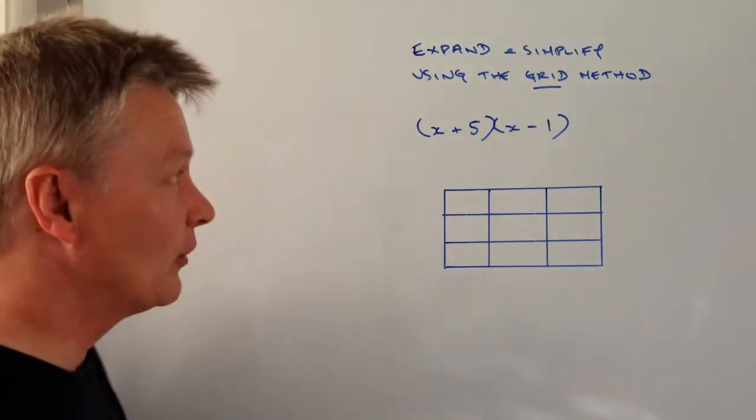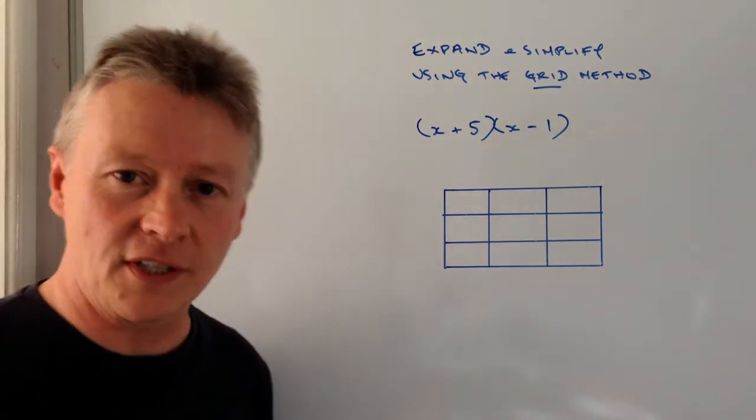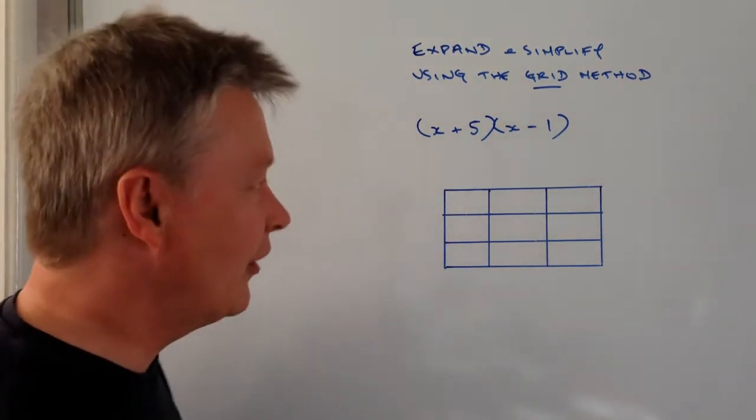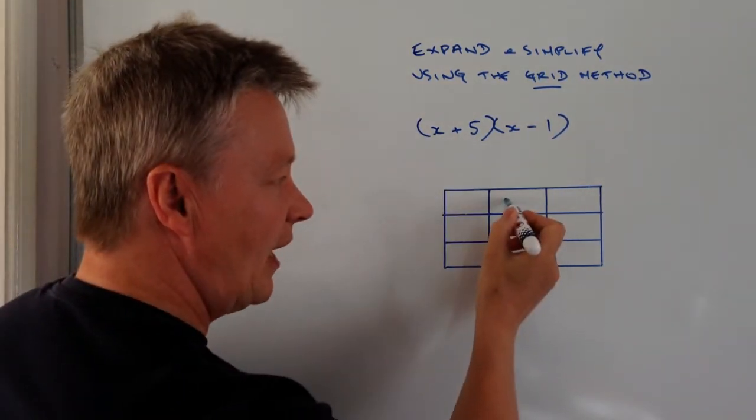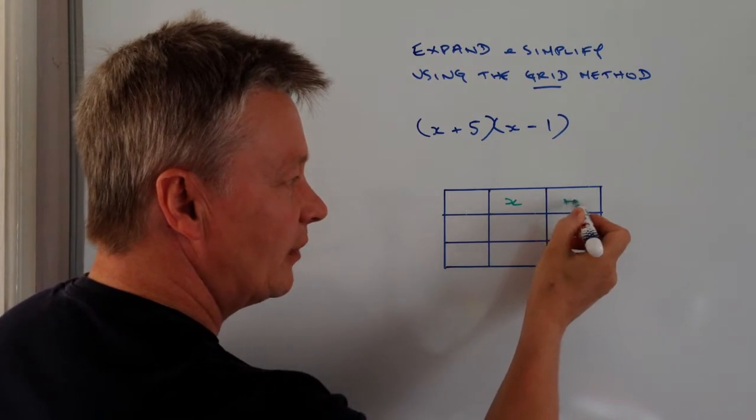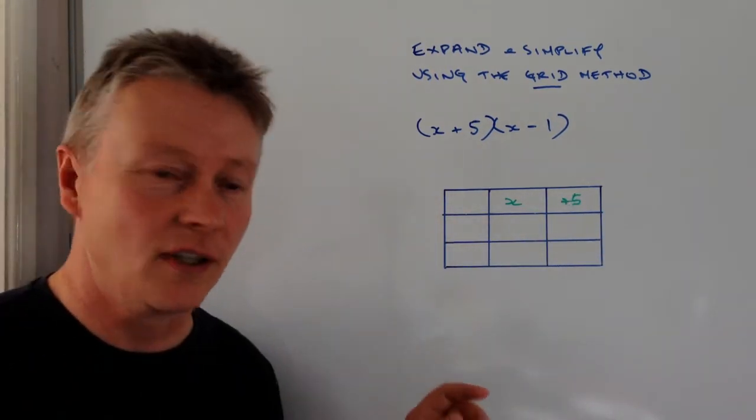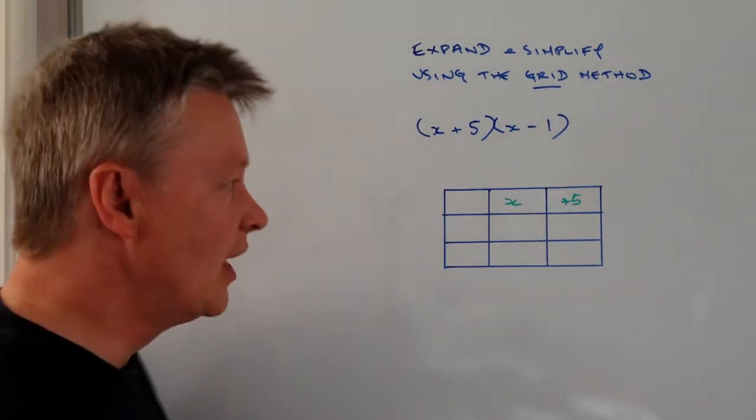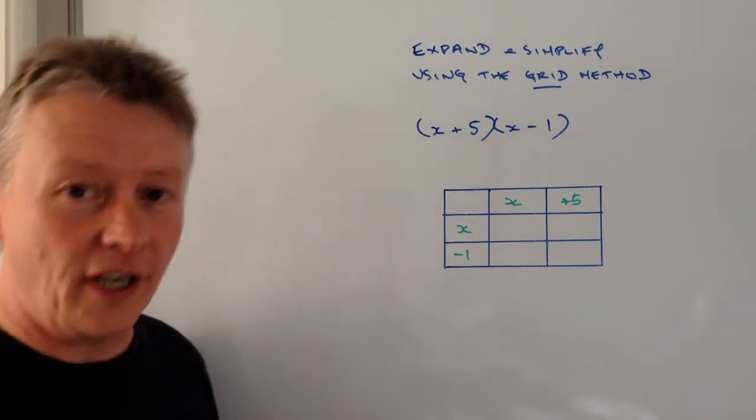It's relatively straightforward, all it is is that you've got this grid and when you're doing things like long multiplication they call it partitioning, well it's exactly the same thing. In that we've got x plus 5 here, so I'm going to put an x in here and a plus 5 in here. It's kind of important that you make sure that you put in the signs of the numbers that you're dealing with, because otherwise it might get a little bit confusing.